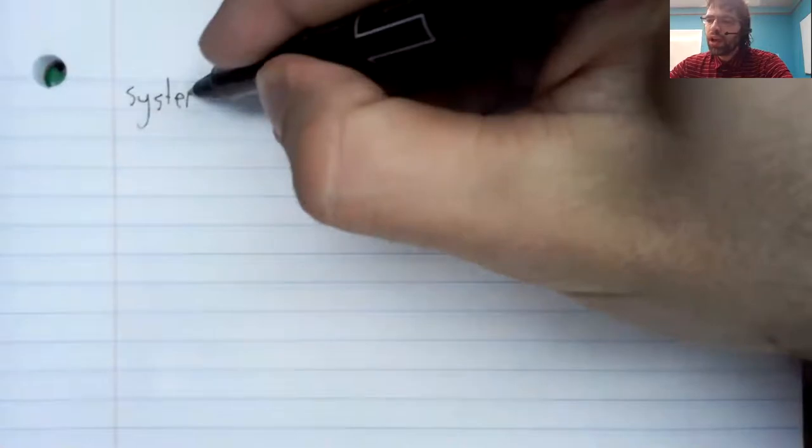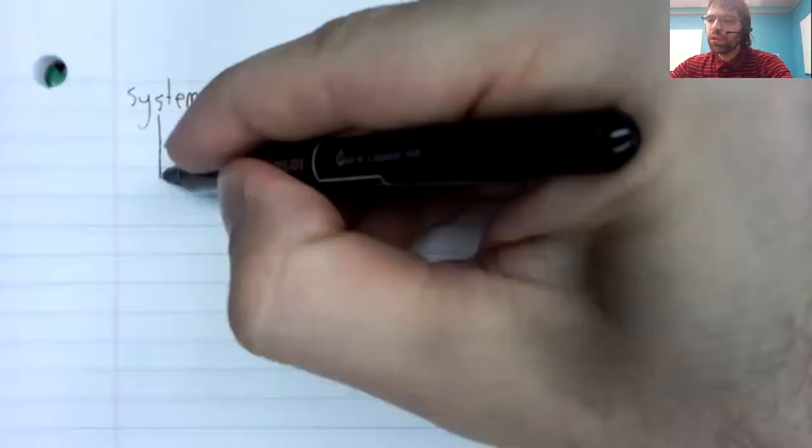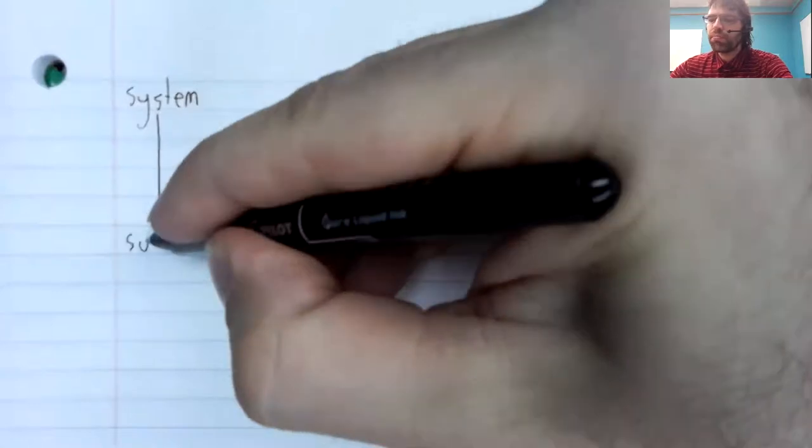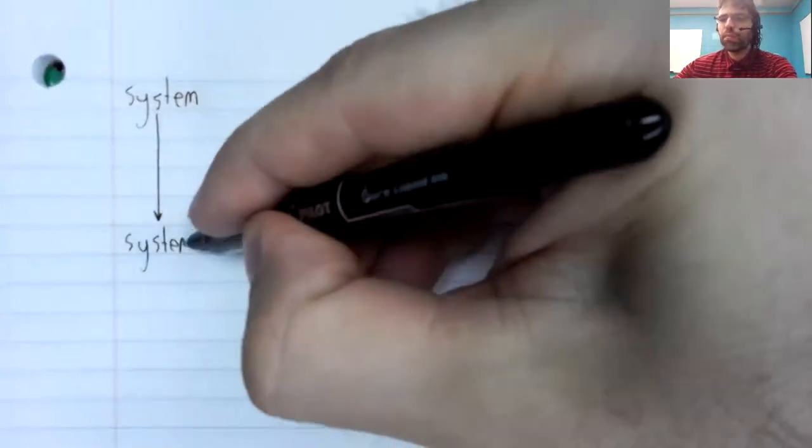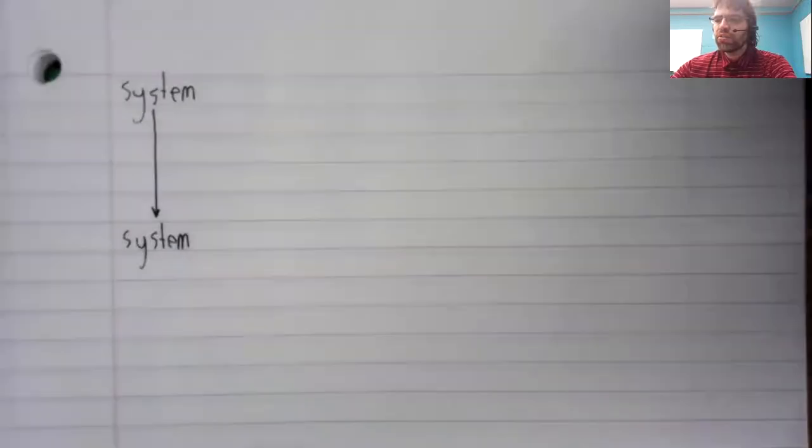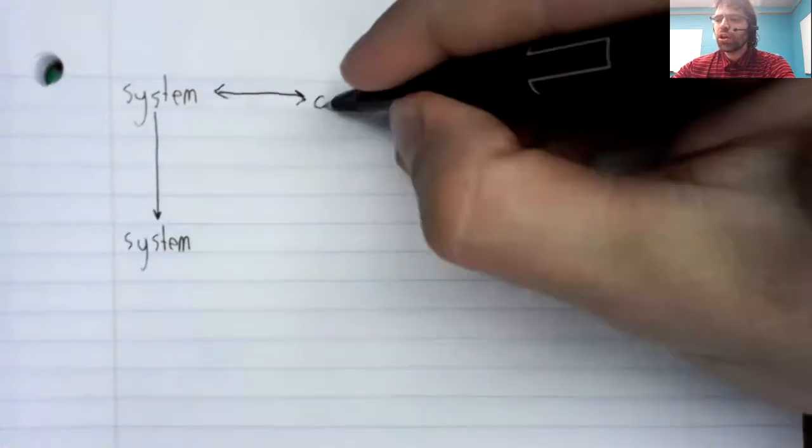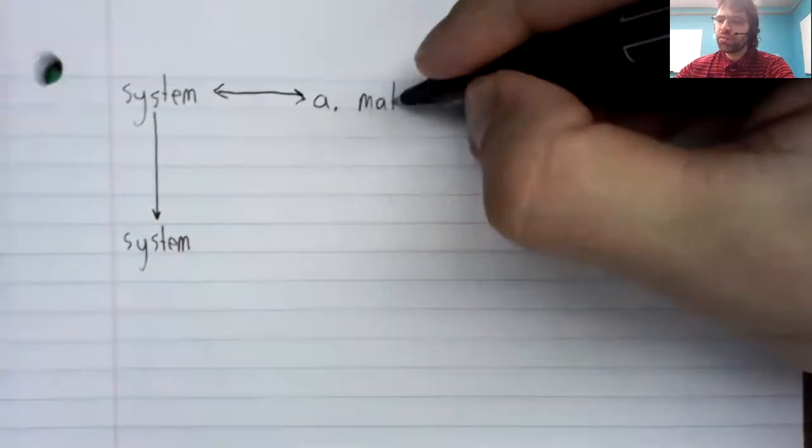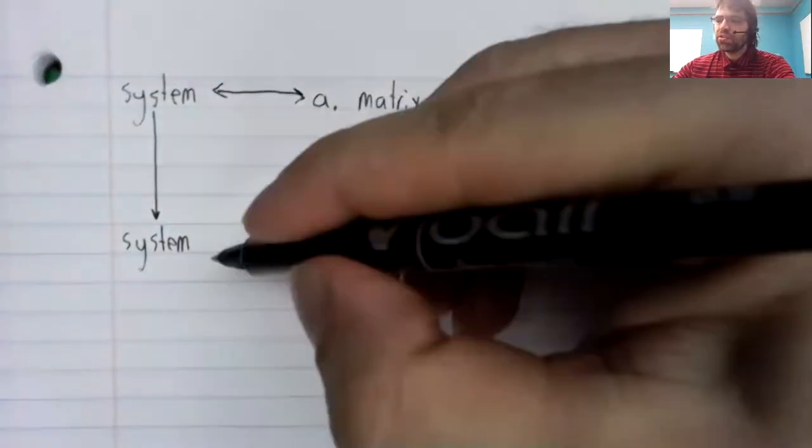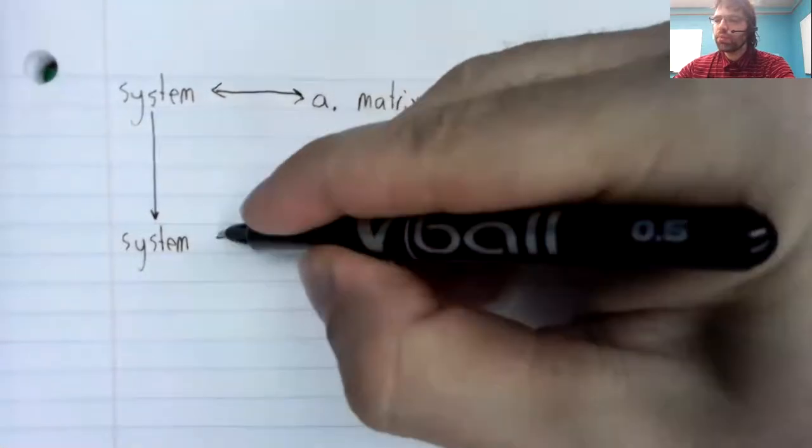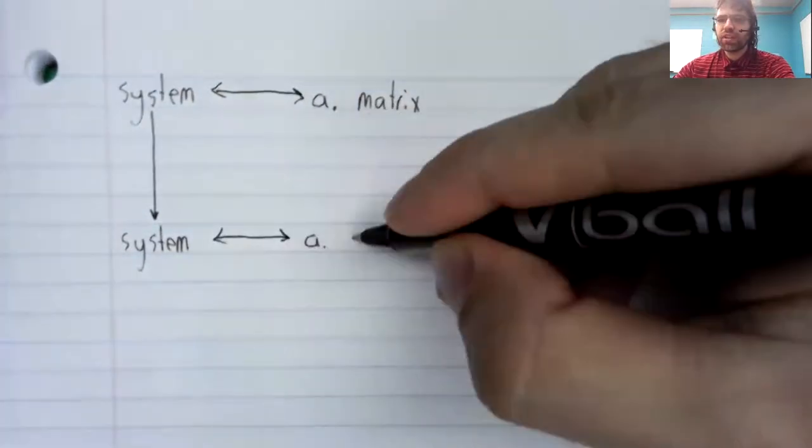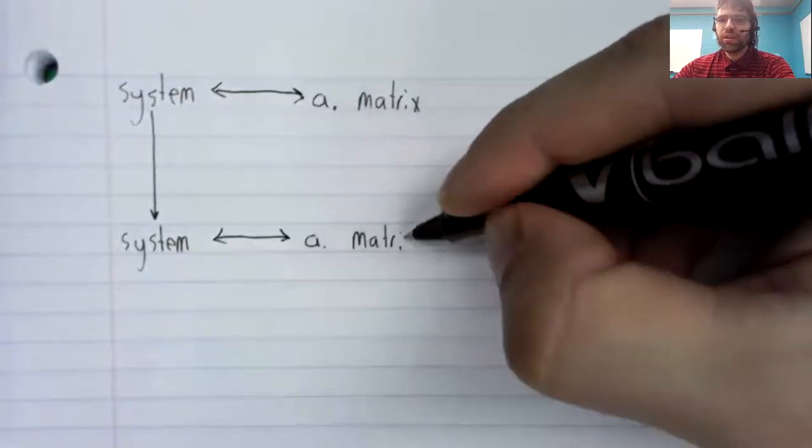That is to say, we've talked about taking a system and modifying it to get another system. This system can be stored as an augmented matrix, and this system can be stored as an augmented matrix.